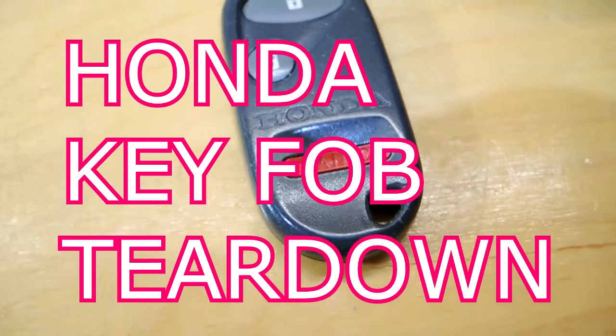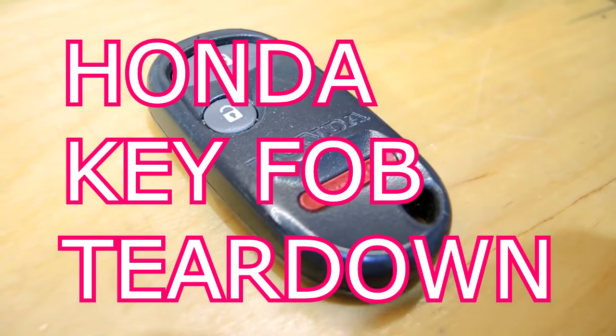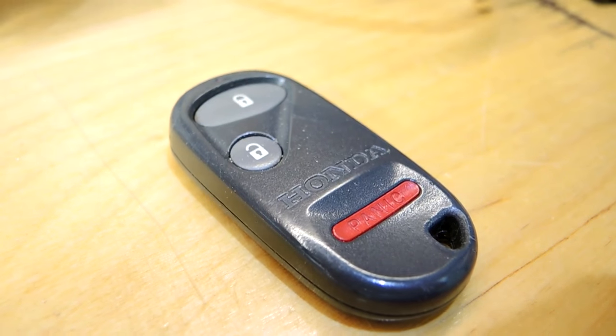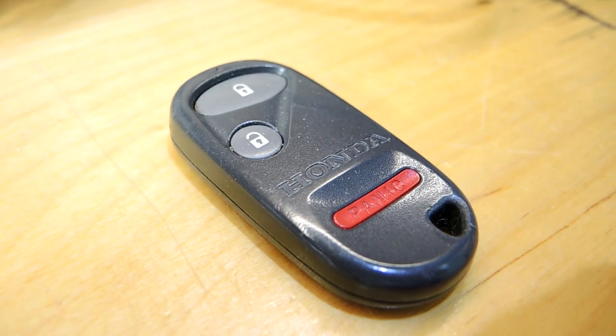Teardown time. This is a key fob for opening the doors on an old Honda Civic, a 2001. I found it in my junk drawer when I was cleaning it in my workshop today, and I thought I'd tear it apart and look at the technology in it.